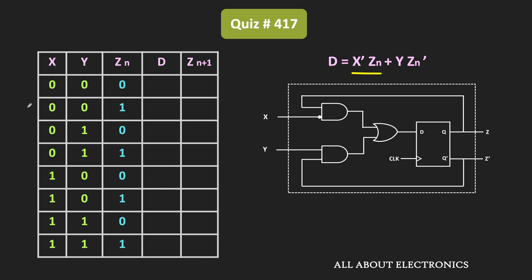This condition occurs for two input combinations where X is 0 and Zn is 1. Similarly, D is also 1 when Y is 1 and Zn is equal to 0, which again occurs for two input combinations where Y is 1 and Zn is equal to 0. In short, D is equal to 1 for four input combinations in total.